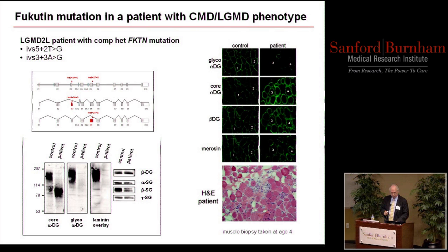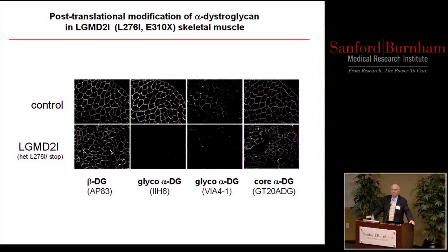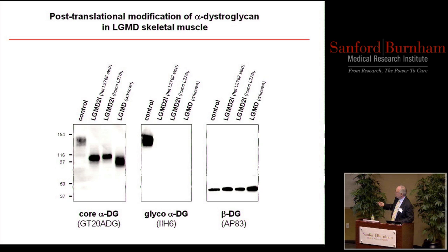There's also another gene, FKRP, that can lead to a milder form of muscular dystrophy. There's a mutation prominent in Norway with a carrier rate of around 1 in 100 — an isoleucine to leucine mutation, which is quite surprising that it causes disease. You can see with staining of the glycoepitopes that there's a deficiency. On Western blotting, different LGMD patients with several different mutations show the core protein present and beta-dystroglycan present, but no 2H6 staining and no evidence for full glycosylation.